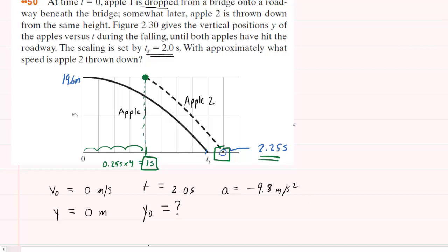So in fact, the time interval for Apple II would be 2.25 seconds minus the 1 second. And that's going to give us a total time span of 1.25 seconds. That is how long Apple II is in the air. This is going to turn out to be very important for us.